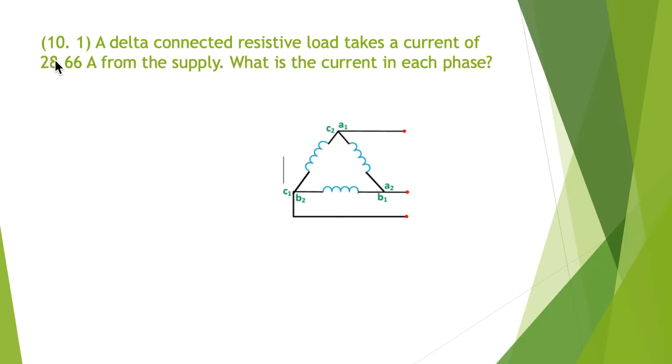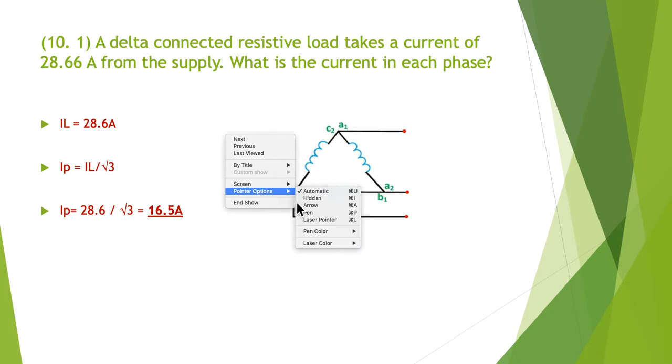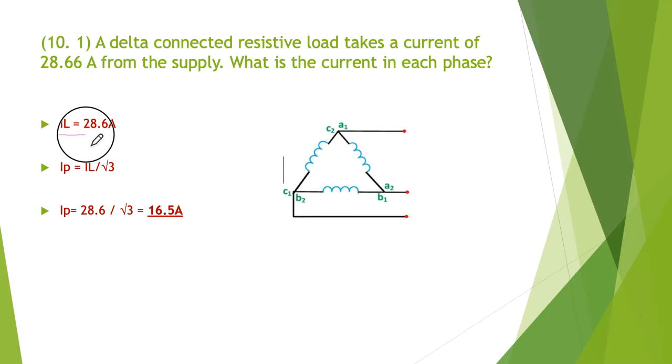So our first problem, 10.1, is a delta connected resistive load takes a current of 28.6 amps from a supply. What is the current in each phase? And as I continually hound my students, make sure you draw the diagram. They tell us what I line is, so they tell us that it's 28.6.